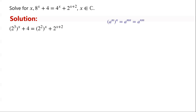We know that a to the power of m, all to the power of n, equals a to the power of mn, which equals a to the power of n all to the power of m. By applying this, 2 cubed all to the power of x is equal to 2 to the power of x, all cubed.